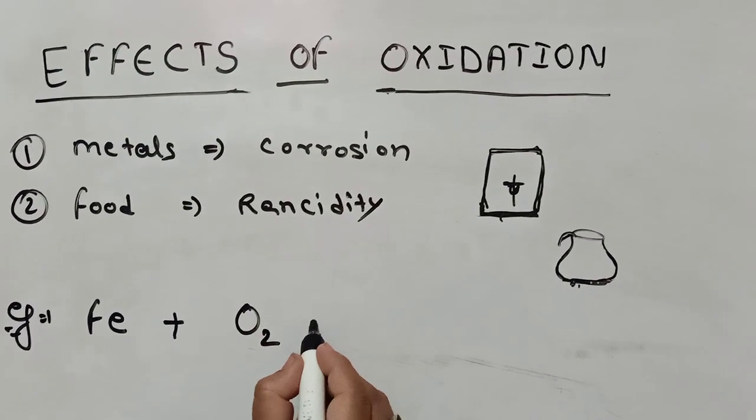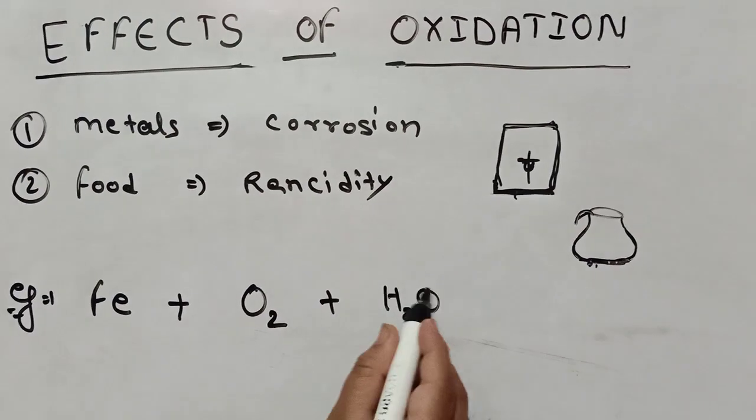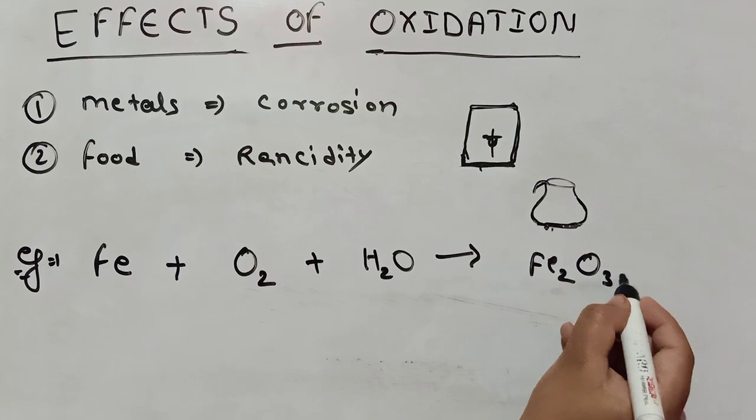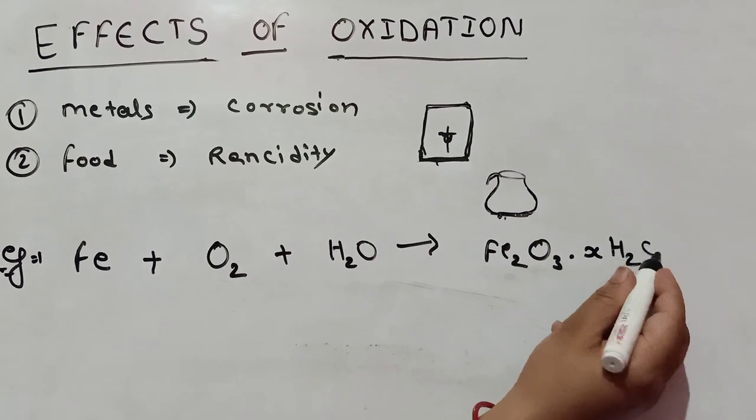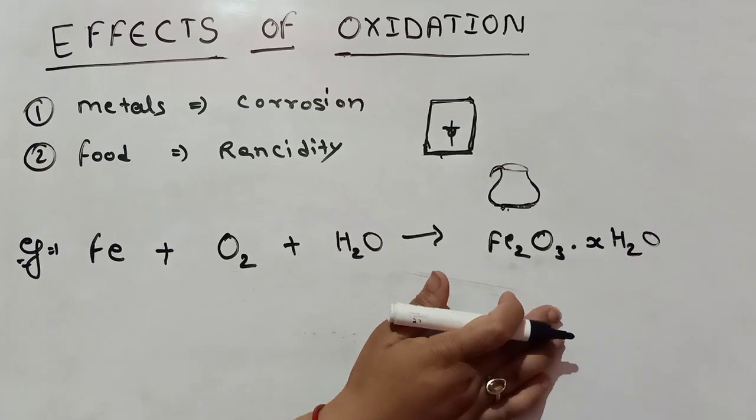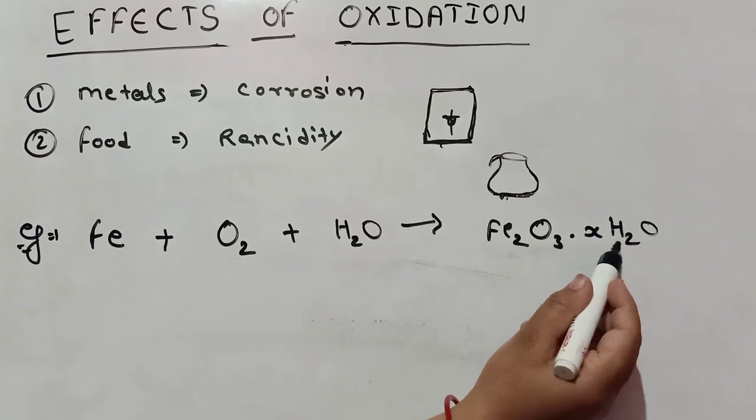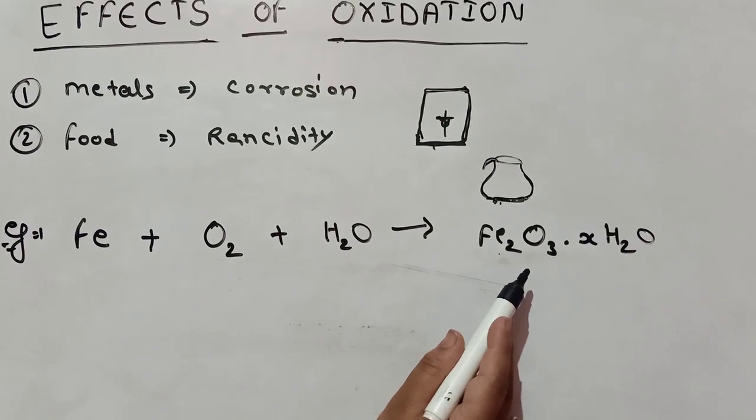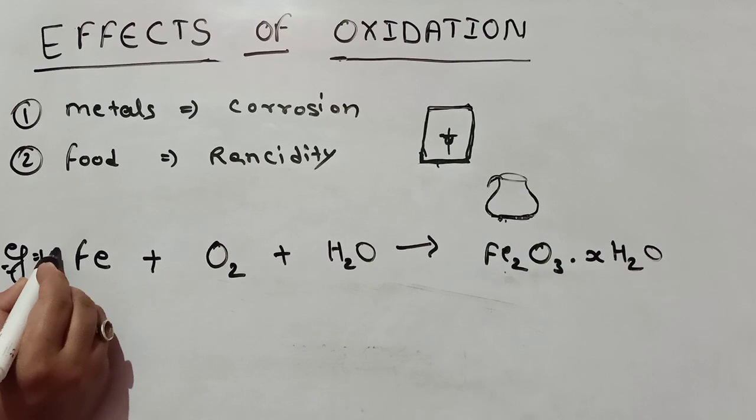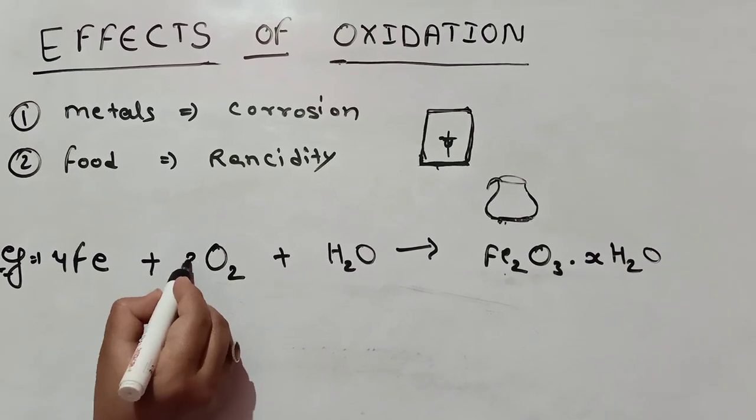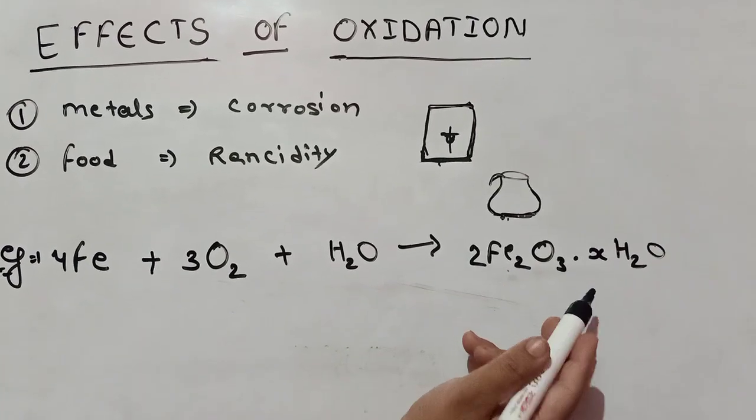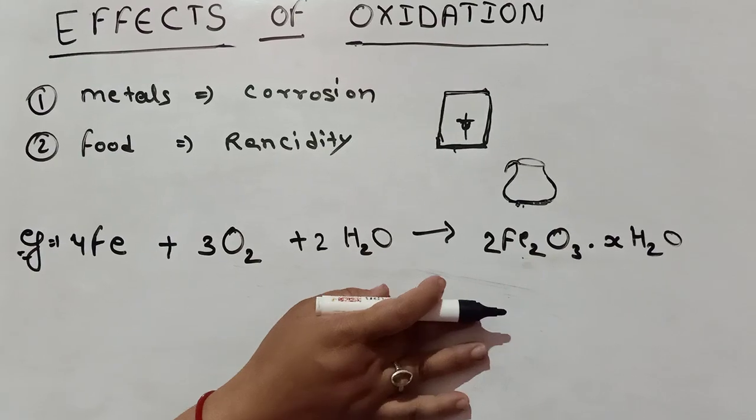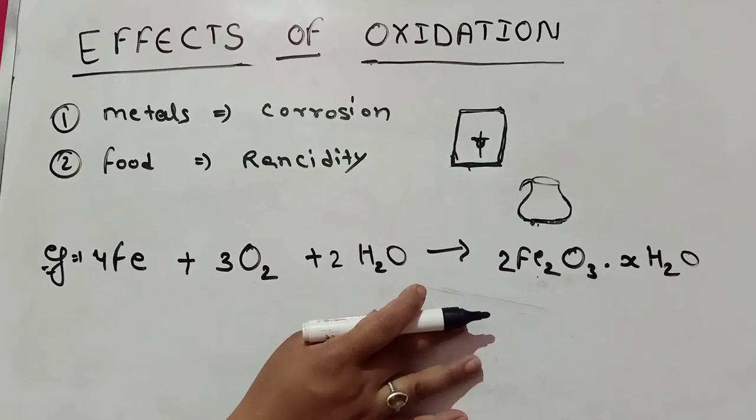If iron is exposed to oxygen and water, it forms a layer of rust. The chemical formula shows that iron reacts with oxygen and water to form hydrated ferric oxide, which is the rust. This is a rusting example of metal. We balance the reaction as shown.